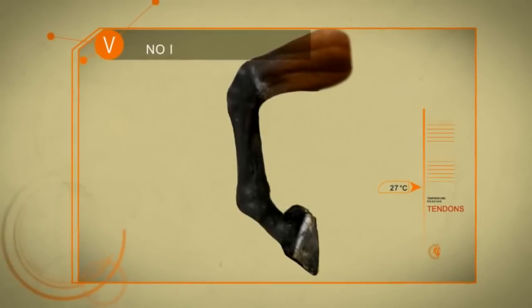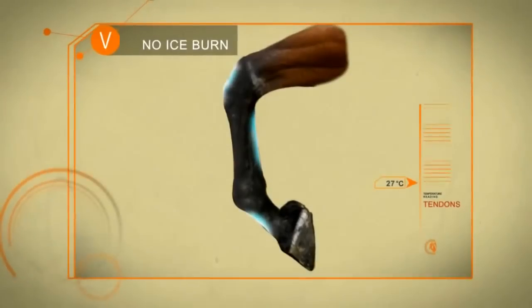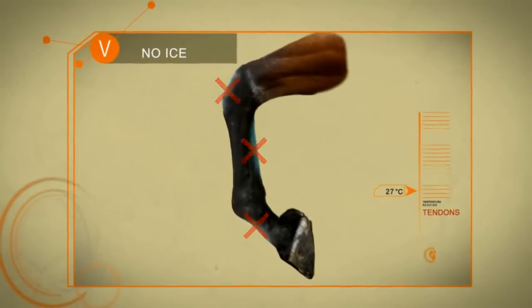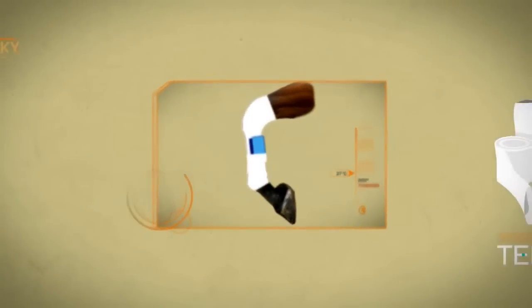As an added bonus, the Tendon Grip effectively protects against ice burn, because it avoids direct contact between the ice and the skin while still getting the ice as close to the leg as possible.